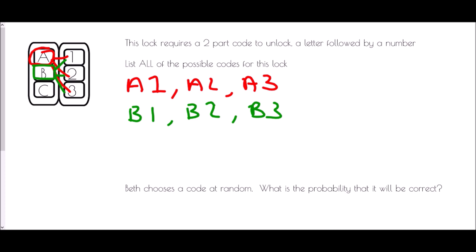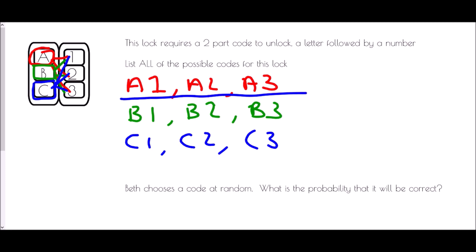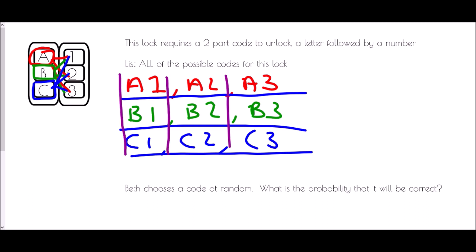Finally, if we start with C, that could be C1, C2, or C3. This is what we mean by systematic listing — all of the first ones are about A, then all about B, then all about C — and we have found all of the different outcomes we could possibly have.